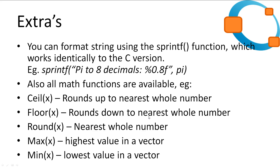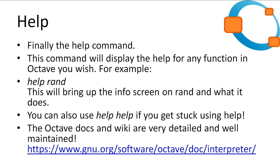Some extra things to note: there are a lot of built-in functions. Octave even comes with the string formatting function sprintf — for example, printing pi to 8 decimal places. Many standard functions found in other libraries are implemented in Octave, such as ceil (rounds up to the nearest whole number), floor (rounds down), round (rounds to nearest whole number), max (the highest value in a vector), and min (the lowest value in a vector).